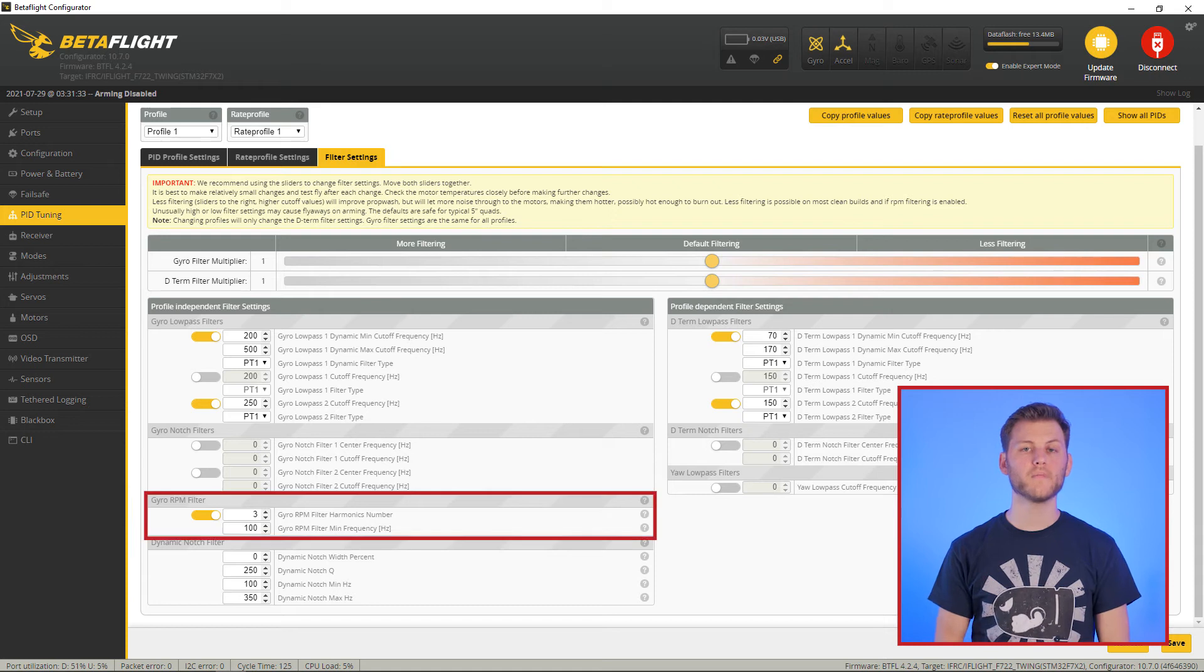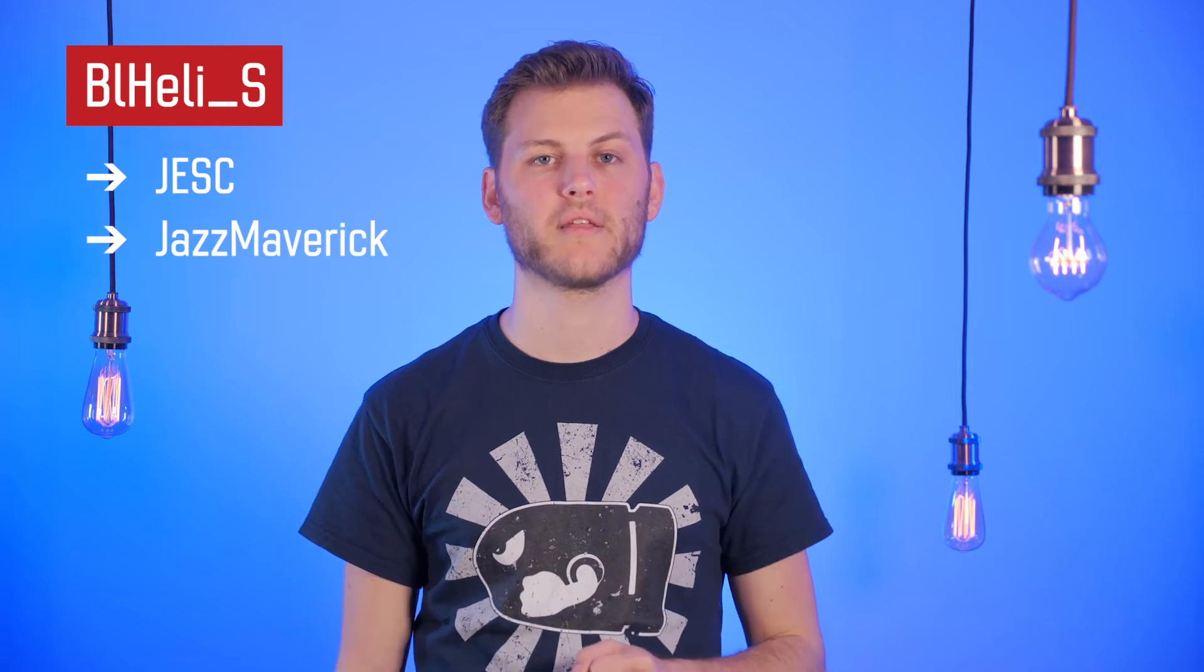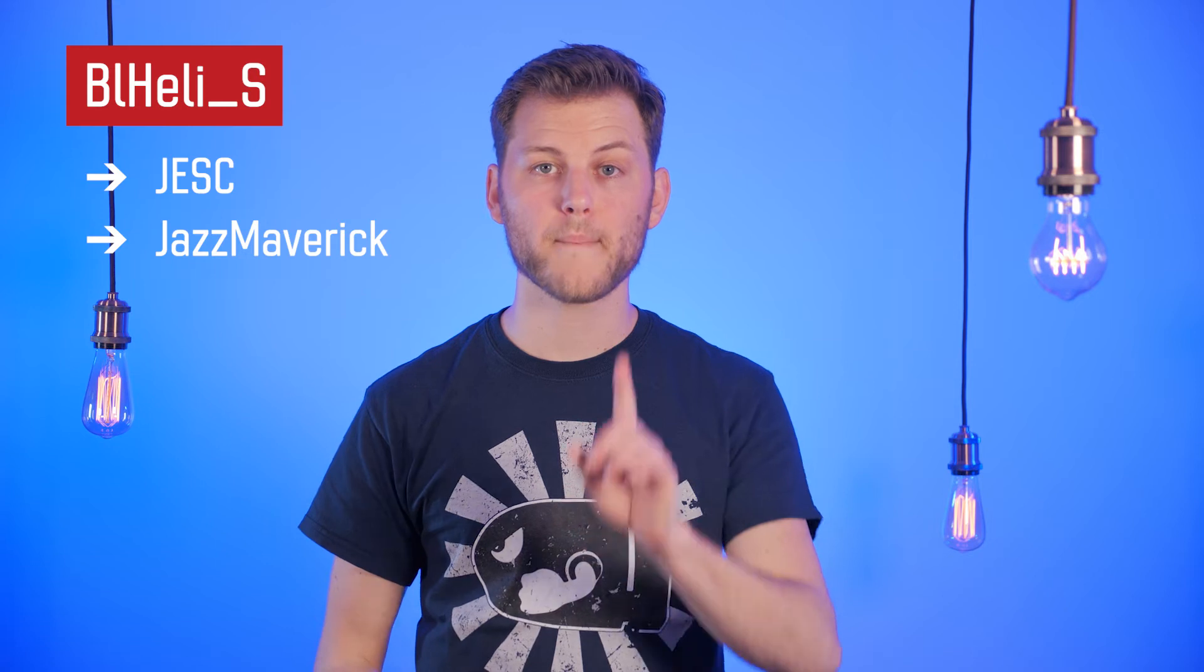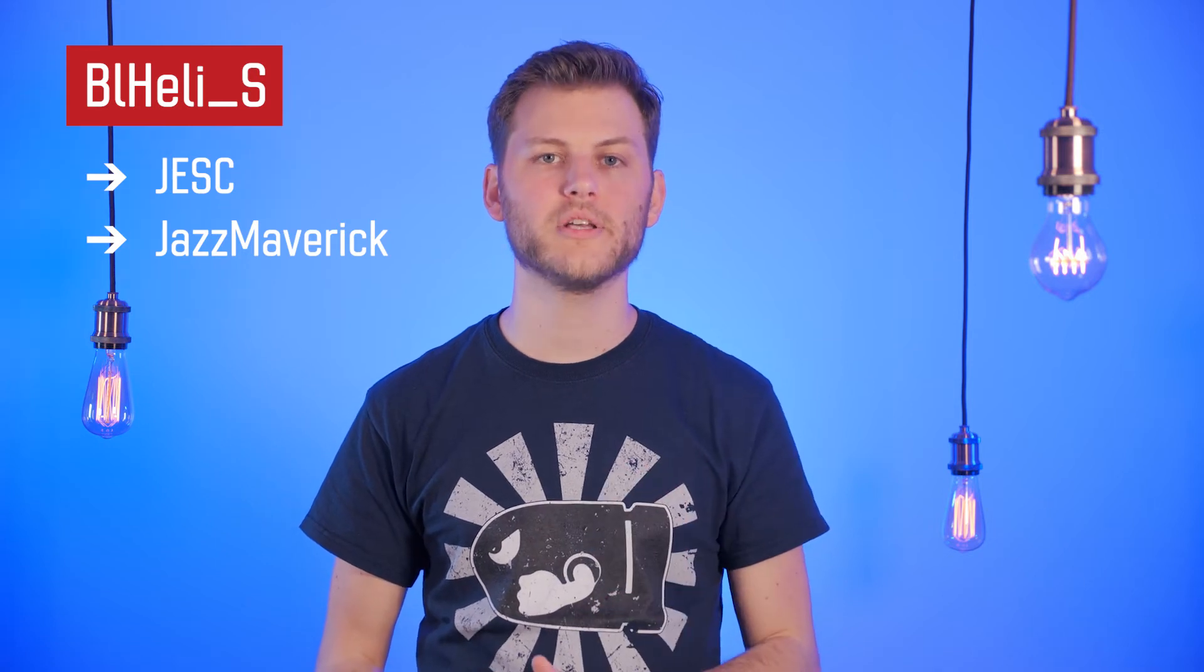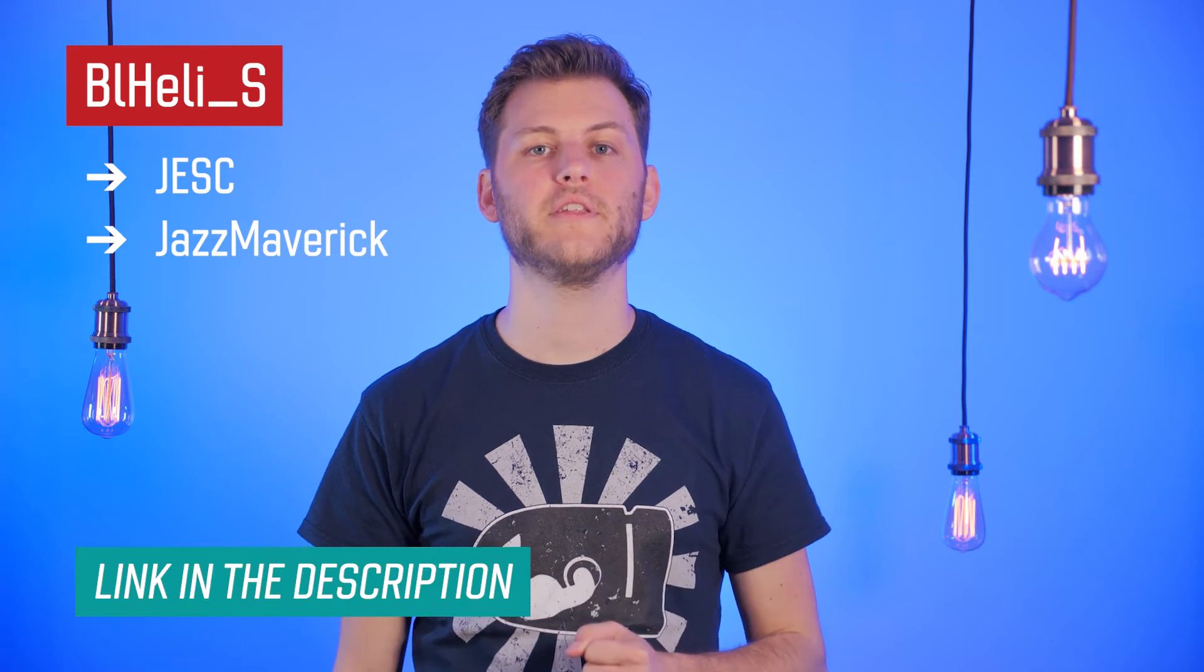Then you will see the RPM filters on the filter page. If you have BL-Heli S ESCs, there is still a way to get this, but you will need to use JESC or JazzMaverick. Since I haven't used any of them yet, I can't cover the subject. But you can find all the information online, for example from Joshua Bardwell, who made a video specifically on these two firmwares.